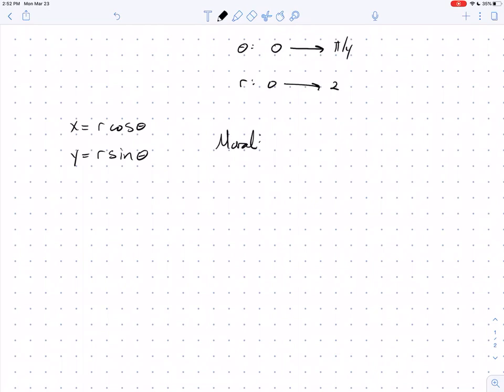Here's the moral of the story: when you want to write down dA in polar, dA is not just dr dθ, it's r dr dθ. When I want to make this switch, my original integral looks something like this: it was a double integral over some region f of x,y dA.